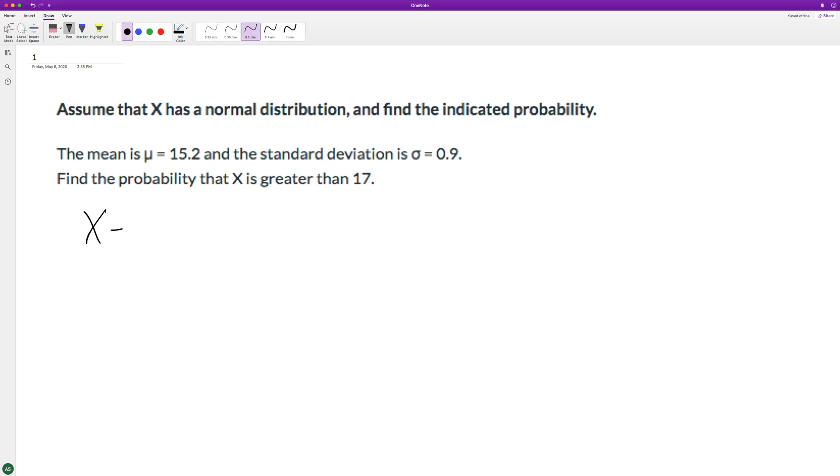So what we'll do here is we'll do X minus mean divided by the standard deviation, so it's going to be equal to 17 minus 15.2, divided by 0.9. This will give us a Z-score.